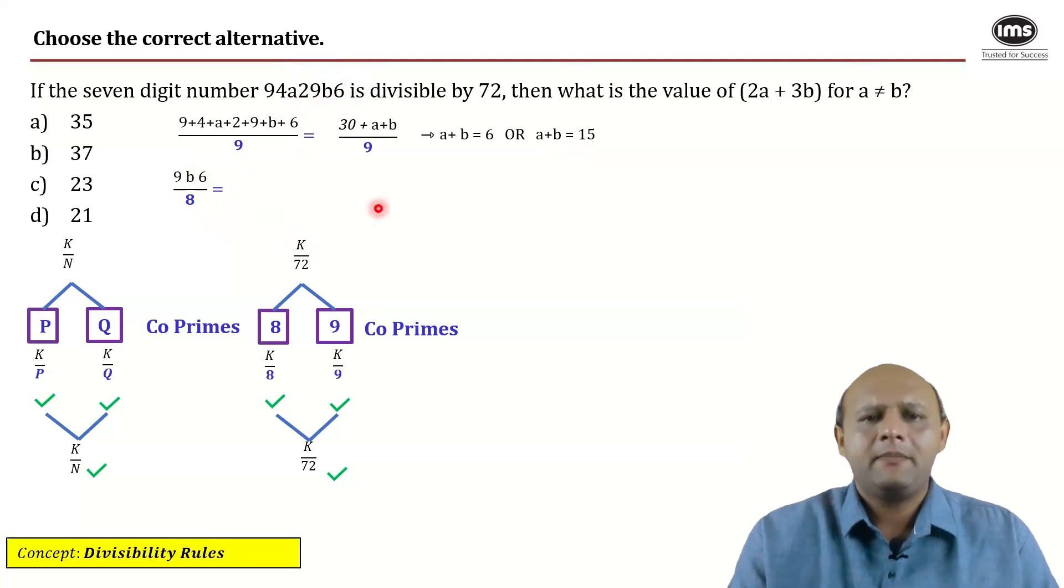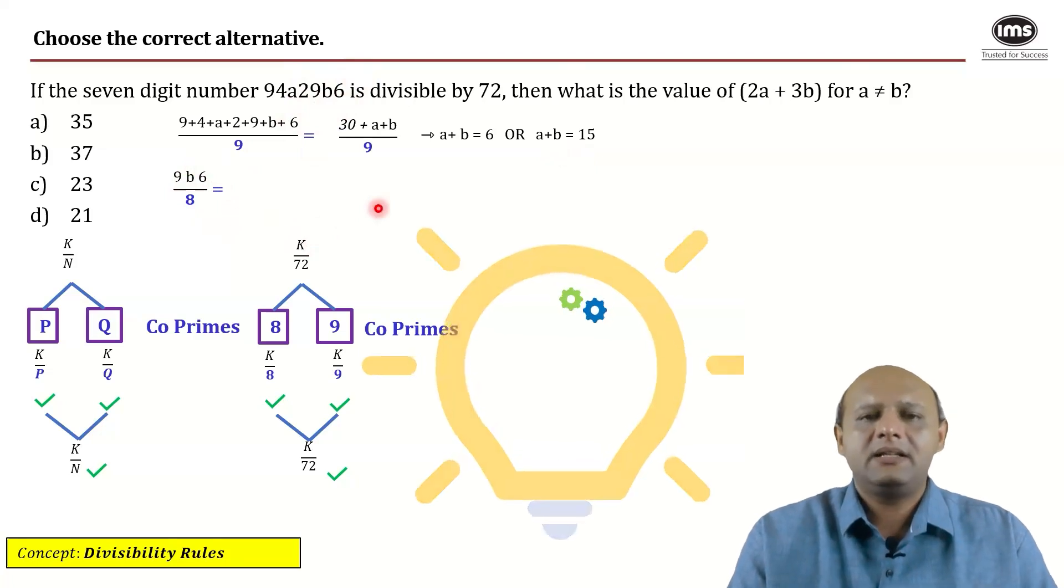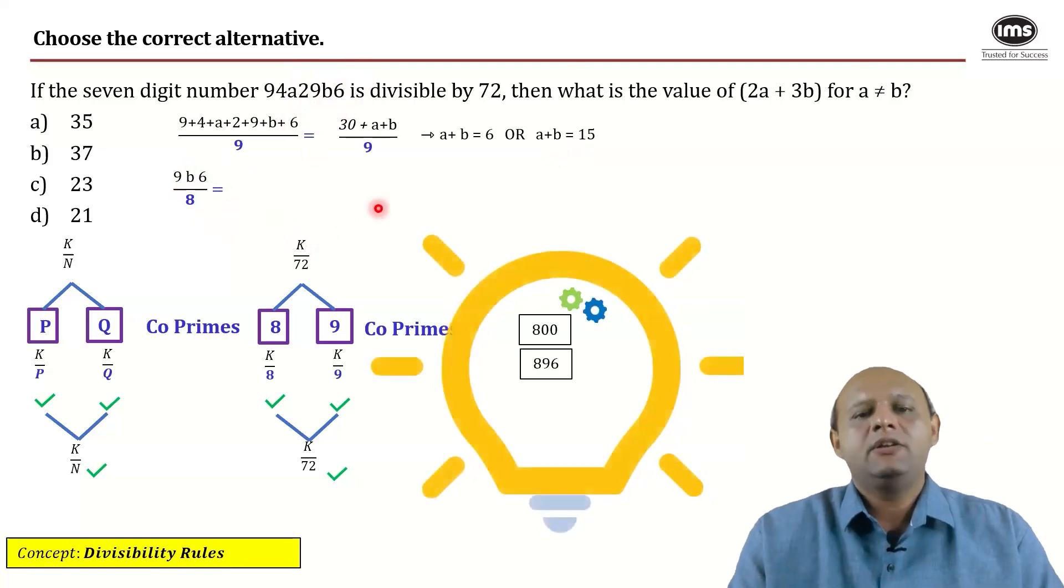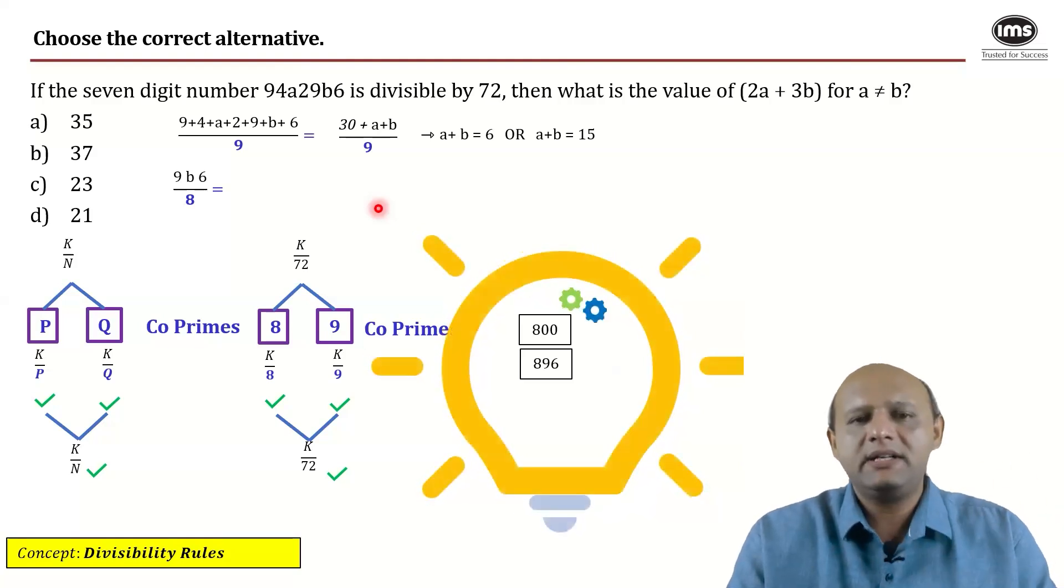There are many ways, but let us check one. The first number that immediately occurs to us is obviously 800, it's a hundred multiple of eight. You can quickly move on to 896, 12 eights are 96, or you could divide 900 by eight, check the remainder and then you could proceed or you could reach at 896.